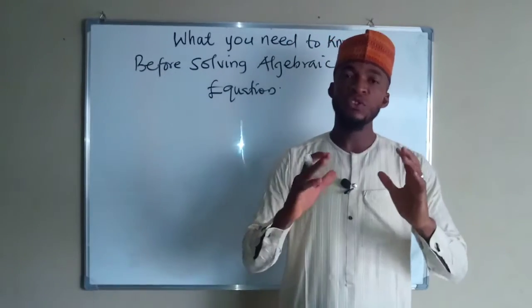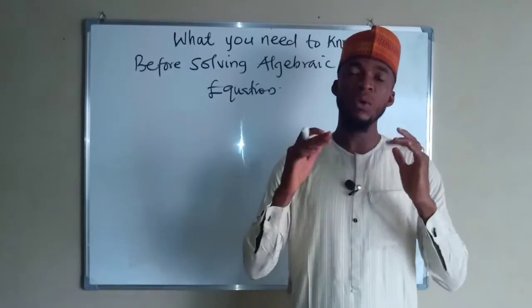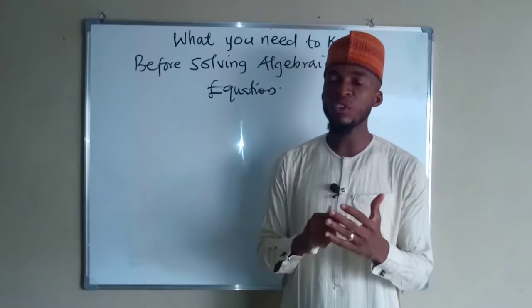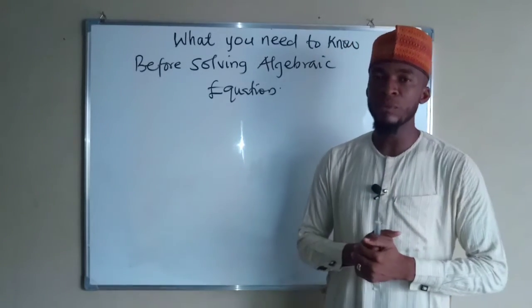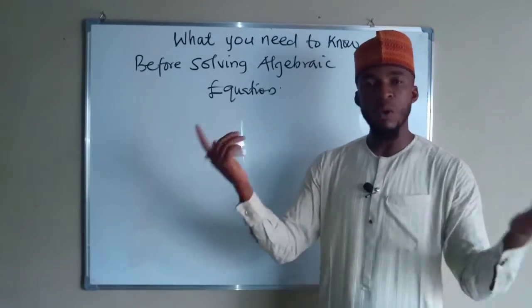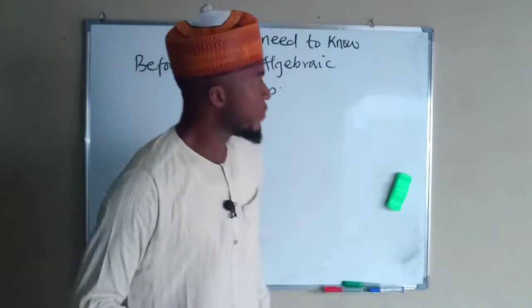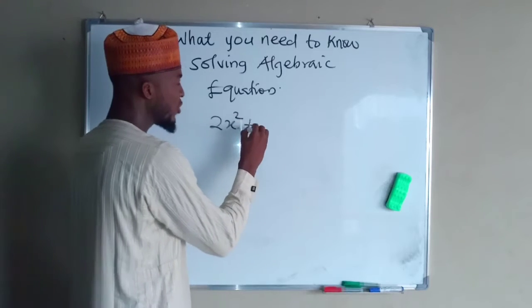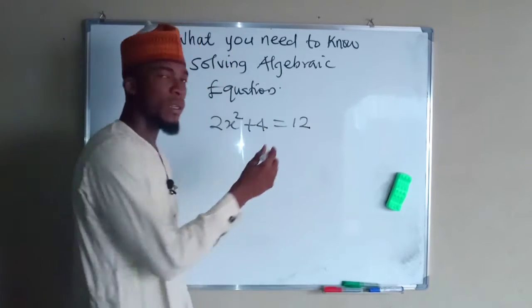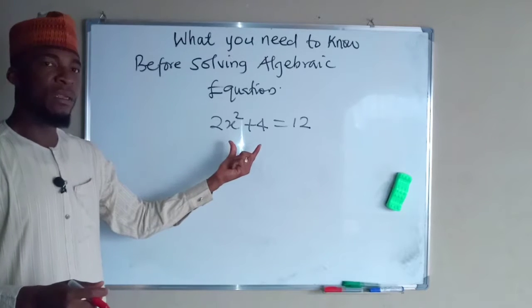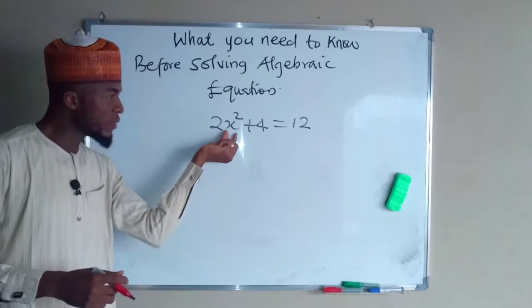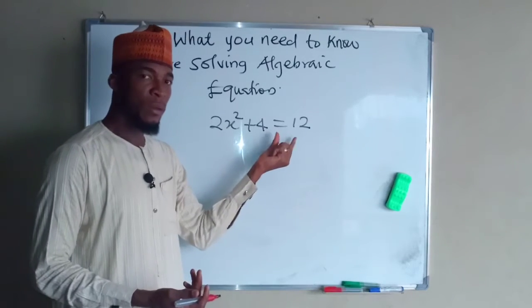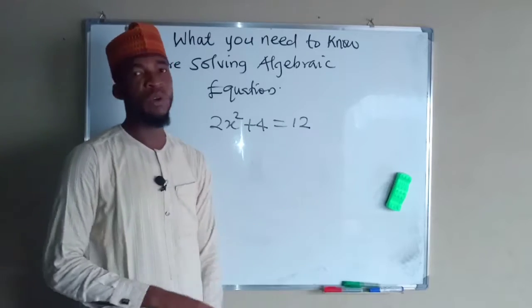Hello, good afternoon. This tutorial is going to be based on what you need to know before solving any algebraic equation. An algebraic equation must contain at least one unknown variable and an equality sign. For example, if you have 2x squared plus 4 equals 12, this is an algebraic equation. It comprises the unknown variable x, which we don't know, and an equality sign.